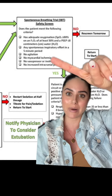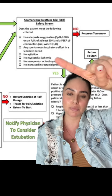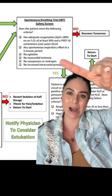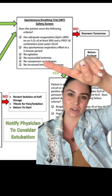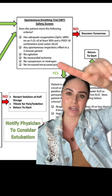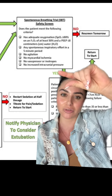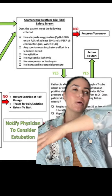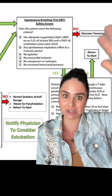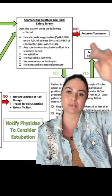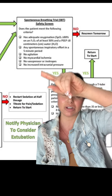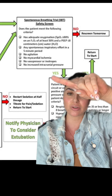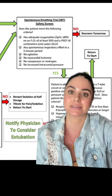We'll also see if they're having no agitation, no MI, no vasopressors or inotropes. However, this isn't necessarily an exclusion criteria — some patients are just on a small dose — but obviously if you're going way up on your pressors on a high dose, that may not be appropriate to extubate. And we don't want any increased ICPs.